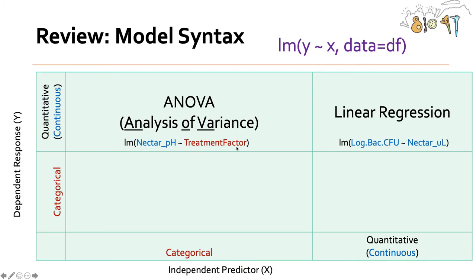So in this case, nectar pH is our continuous dependent response — our y — and treatment factor, which in our case would be the bagged, exposed, and caged flowers, would be our independent predictor.